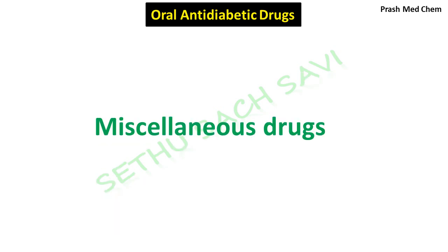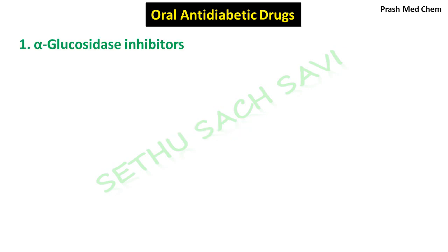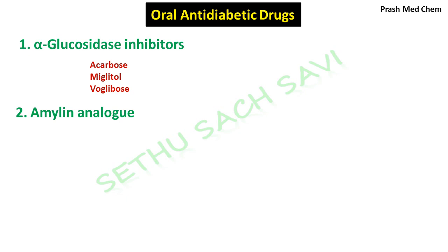Moving to the miscellaneous category — drugs acting by mechanisms different from those above. The first class is alpha-glucosidase inhibitors, and drugs include acarbose, miglitol, and voglibose. The second class is amylin analogues, and the drug is pramlintide. Keep in mind that pramlintide is a peptide-class drug and is therefore given as a subcutaneous injection.